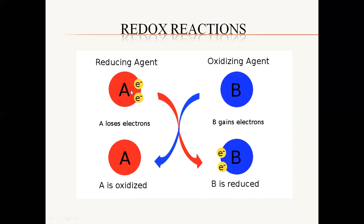In catabolism, a molecule undergoes a series of reactions where electrons are lost, and finally it is changed into a smaller molecule. We have the loss of electrons — we call it oxidation. The other substance is reduced because they gain electrons for the purpose of the production of energy.